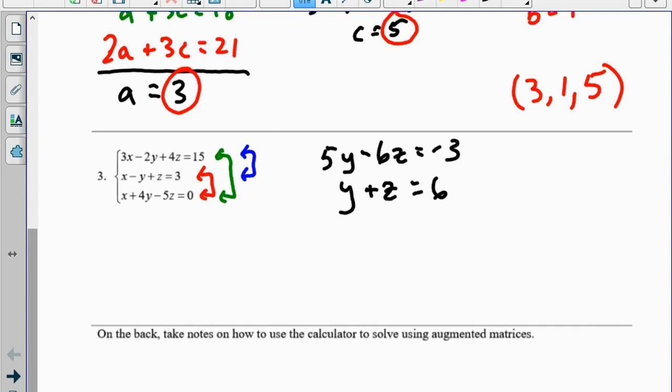So what I'm going to do is multiply the bottom equation by 6, and I'm just going to replace it. So that's 6y plus 6z equals 36.